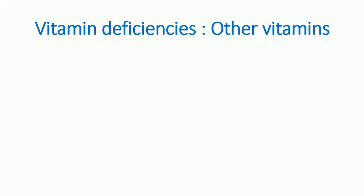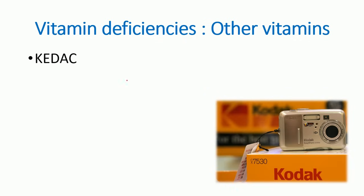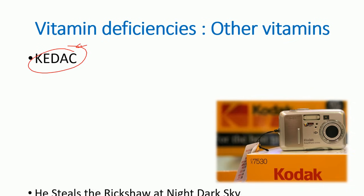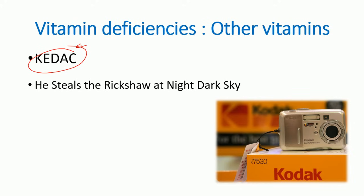Now let's look at vitamin deficiency diseases associated with vitamins A, D, E, K, B, and C. First, deficiencies of vitamins other than B. To remember these, use 'KDAC' — representing K, D, A, and C — and the sentence: 'He steals the rickshaw at night dark sky.' We connect KDAC together: vitamin K, E, D, A, and C, working through each deficiency disease in turn.